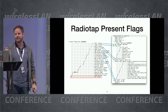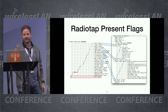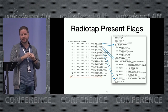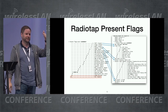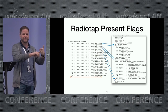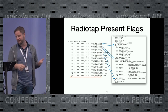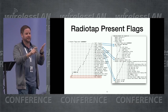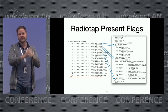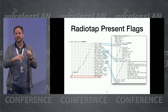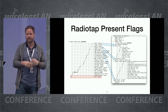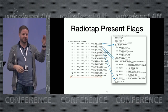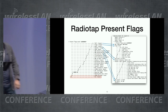Another thing to notice is that the length of each field in radiotap is implicit, which means you have to look at the documentation and say 'okay, signal is supposed to be two bytes' — that's how you determine the length. It's not like the PPI format where you get a TLV structure with an explicit length.